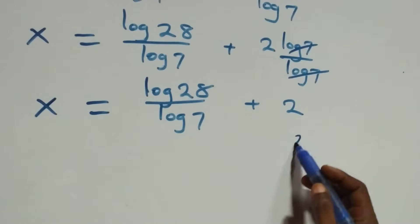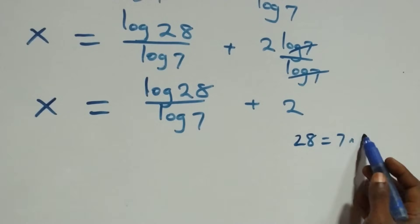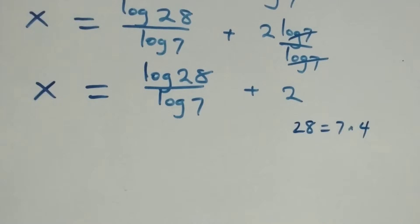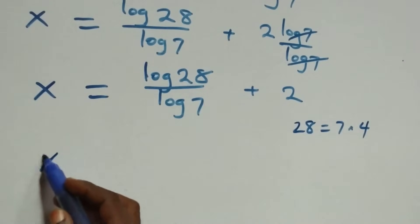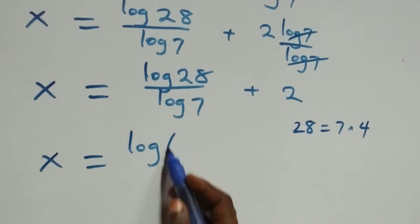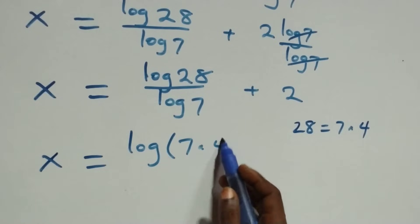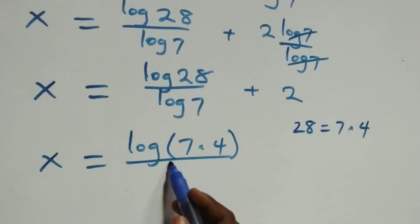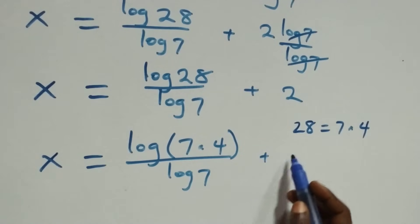We can express 28 as 7 times 4, which implies we now have x equals log of 7 times 4 over log 7 plus 2.